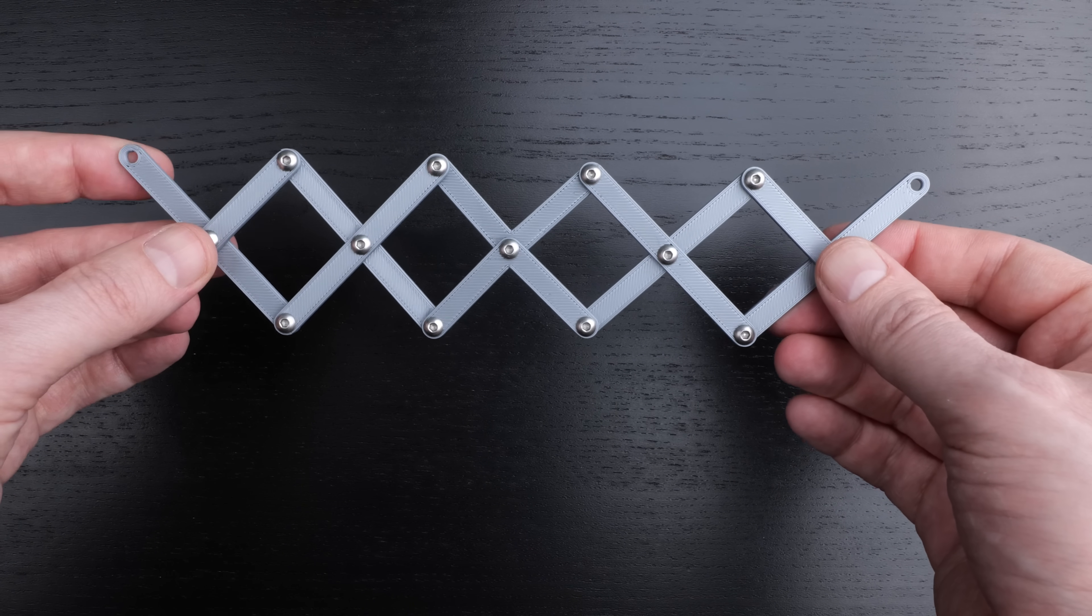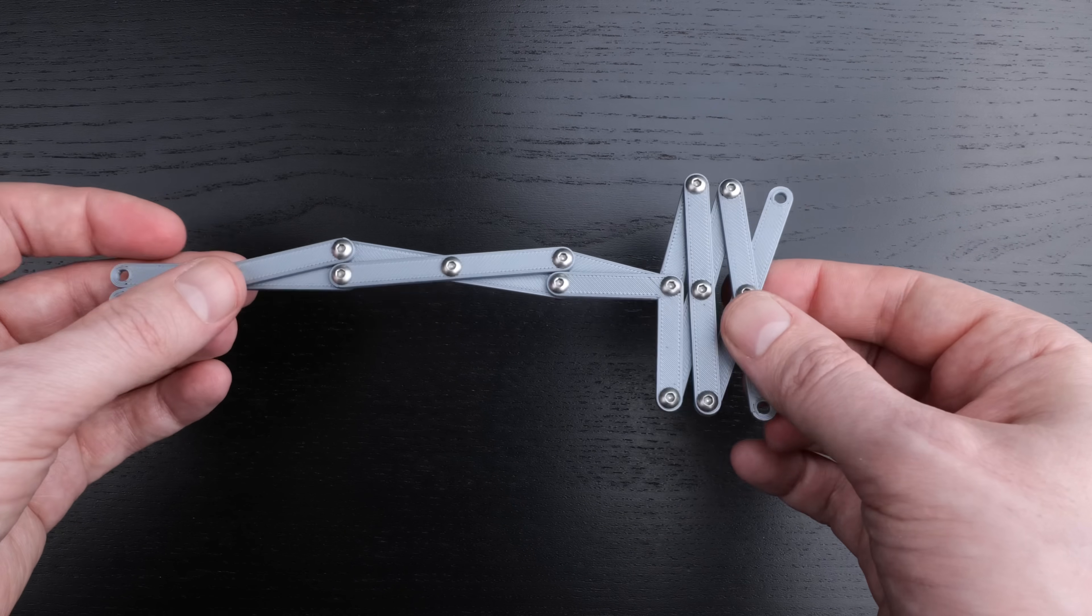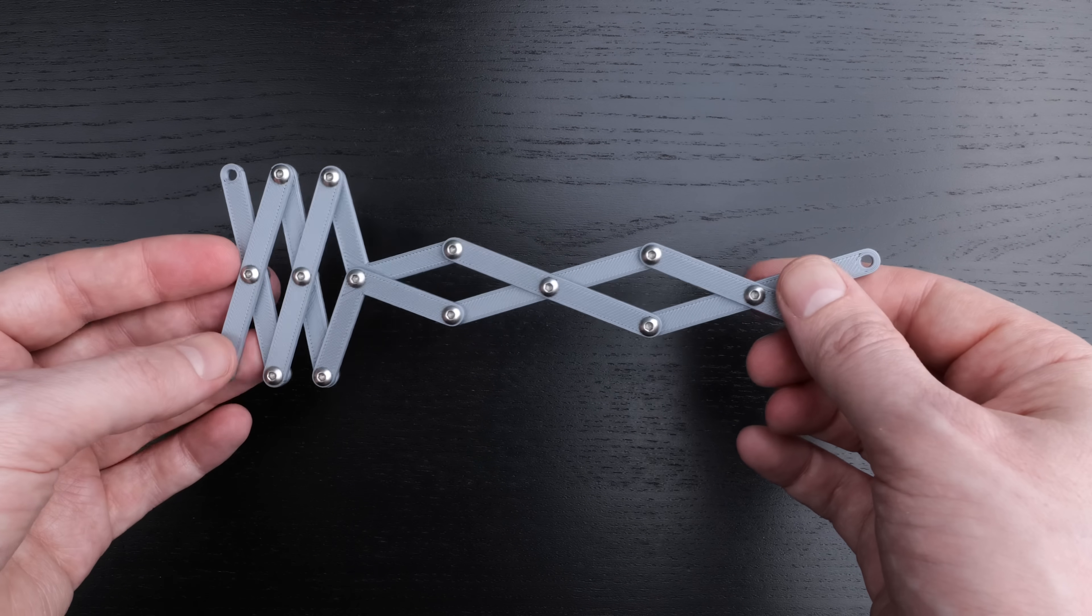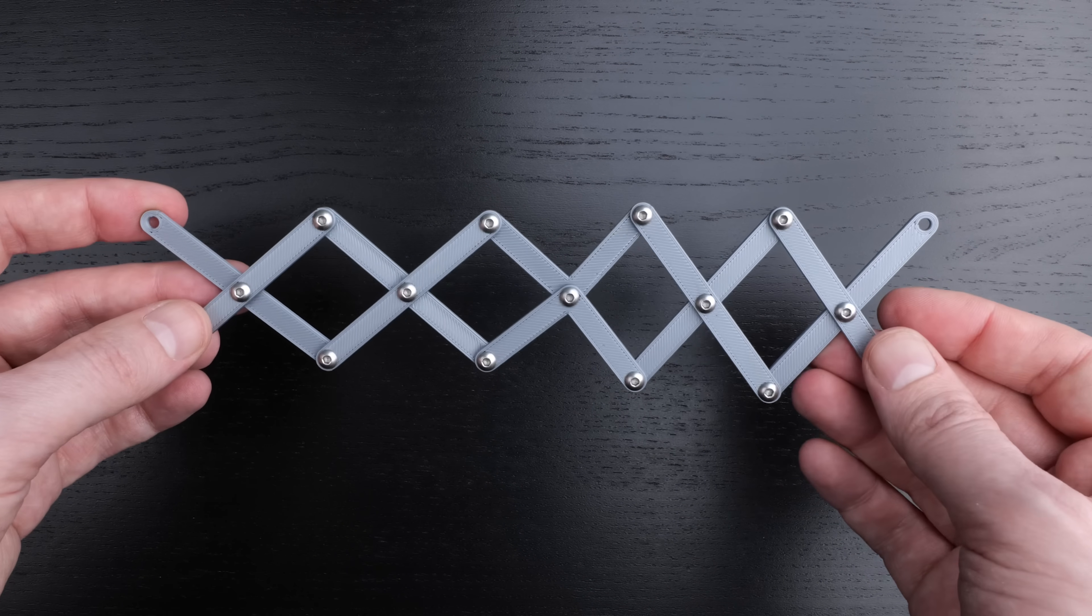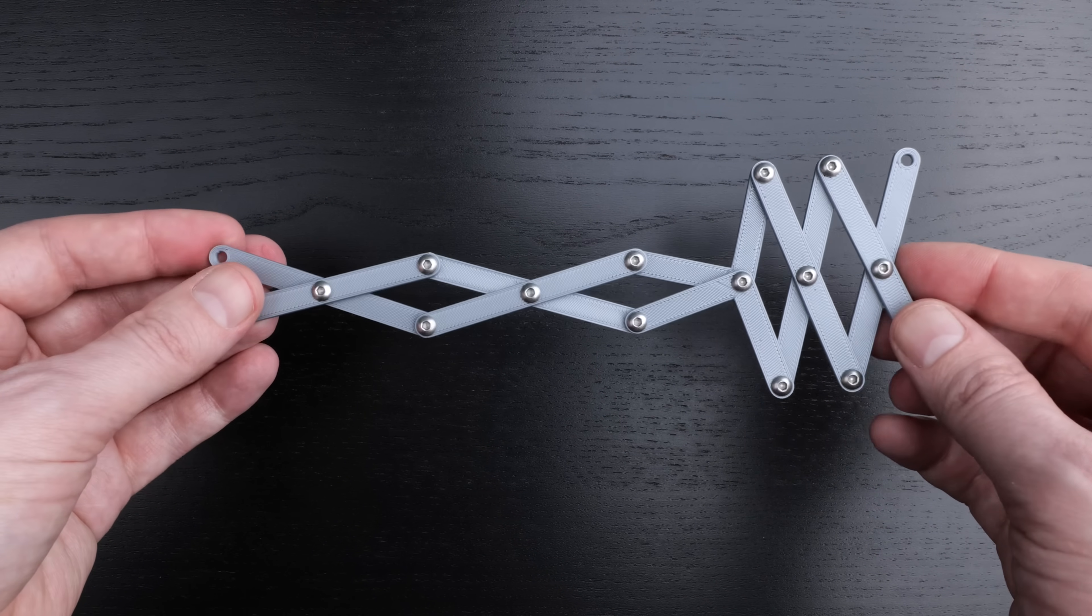Often the point of using a scissor linkage is that it can get longer or shorter, depending on whether the arms are together or apart. This one doesn't get much longer or shorter, but it does change a little bit. It's a little bit longer when it's in the middle than when it's on either of the ends.